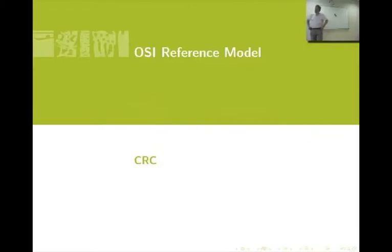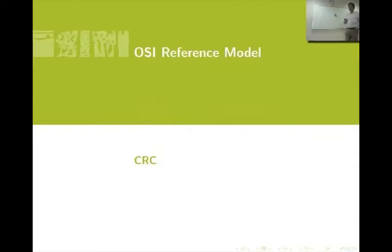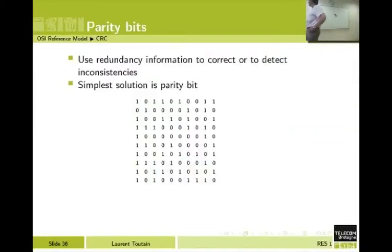But when you send binary information on the link, you have a problem because this binary information can be changed by, for example, some transmission errors you may have on the link. So here, for example, I'm sending a sequence of bits and I want to be sure that it is sent correctly.